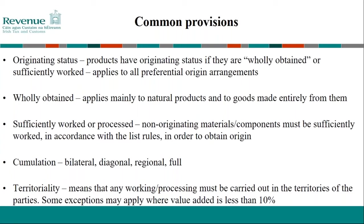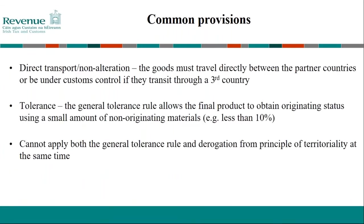There are also different types of accumulation depending on the type of agreement and number of parties involved. The concept of territoriality relates to where materials can be worked or processed — normally this must be done in the territory of one of the FTA partners, but there can be exceptions, especially when value added is less than 10%. Direct transport means goods must either travel directly between partner countries or under the customs transit procedure if moving through a non-partner country. Under the general tolerance rule, the final product may still qualify for preferential treatment even if small amounts of non-originating material have been used — typically less than 10%.